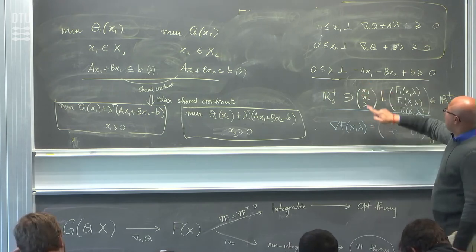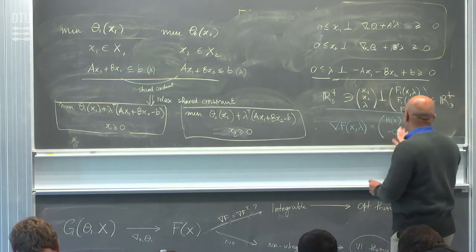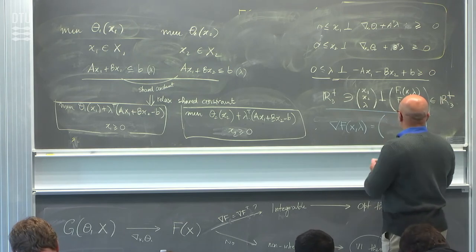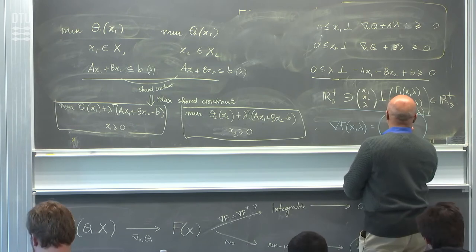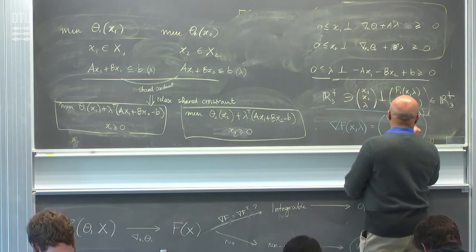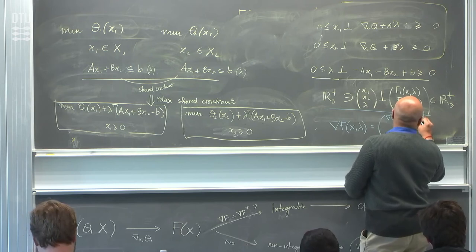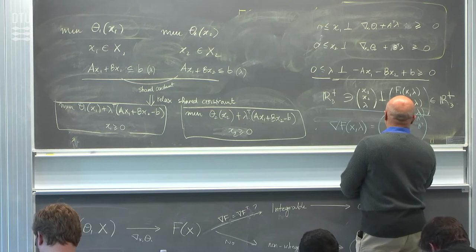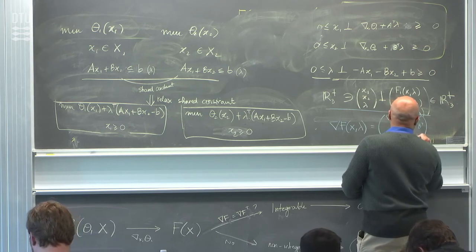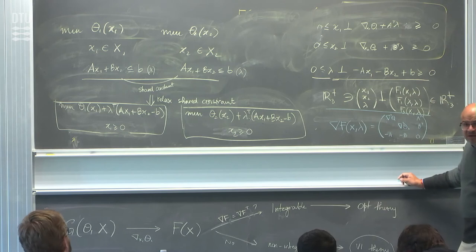It's basically something like H of x where the diagonal blocks are symmetric, and you get C-transpose minus C and 0 in the off-diagonal blocks. You get the Hessian of theta1, the Hessian of theta2, A-transpose, B-transpose, minus A, minus B, and 0. This is a skew-symmetric system.